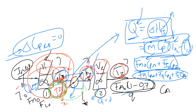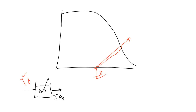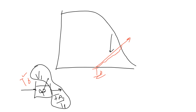For reactor 1, I know the inlet is fixed. I need equations for F_A1, T1, and V1 — three unknowns, so three equations. The adiabatic energy balance is one equation: T equals T-naught plus some function of x, giving me the operating temperature. That gives me two unknowns in one equation.